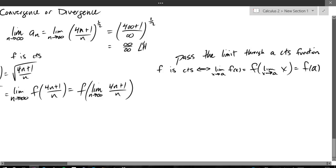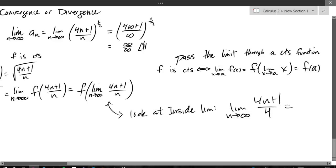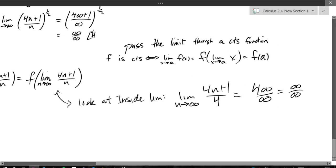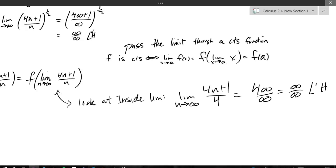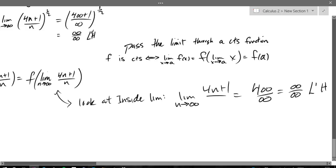So let's just look at the inside limit right now — we're going to ignore the outer f for now, and at the very end we'll apply f to get our actual limit. Looking at just the inside: we have 4 times infinity over infinity, which is infinity over infinity. So now I can use L'Hôpital's rule. We have (4n+1)/n — make sure there's an n on the bottom.